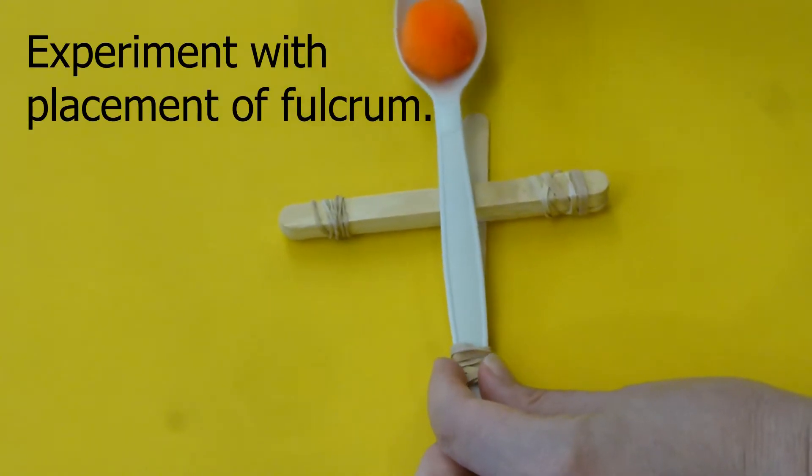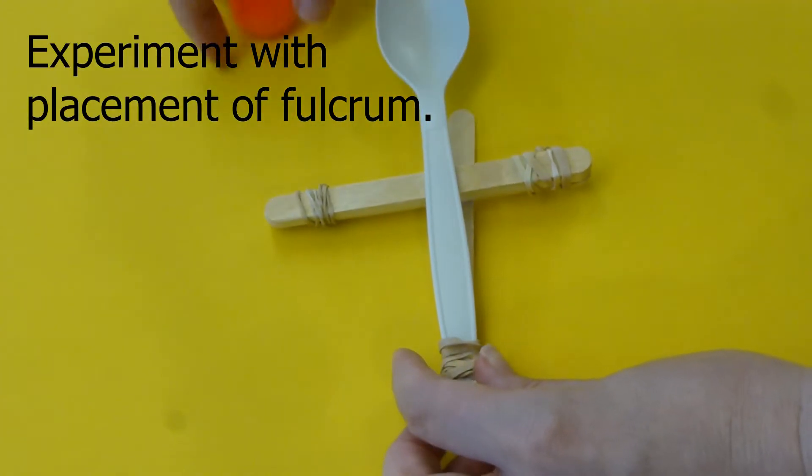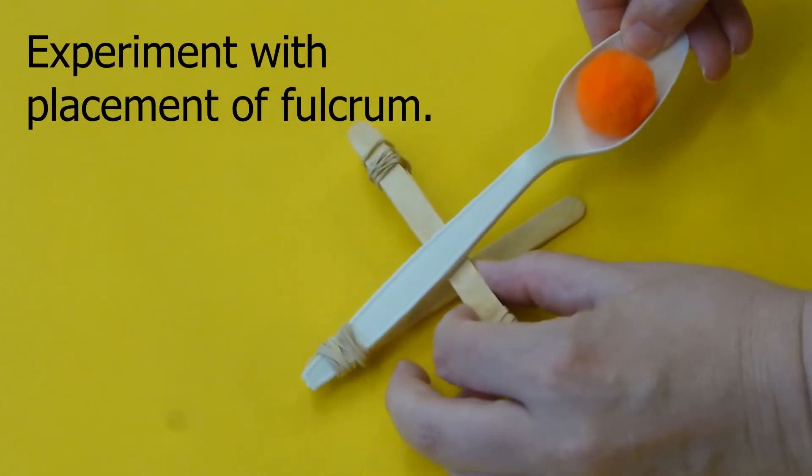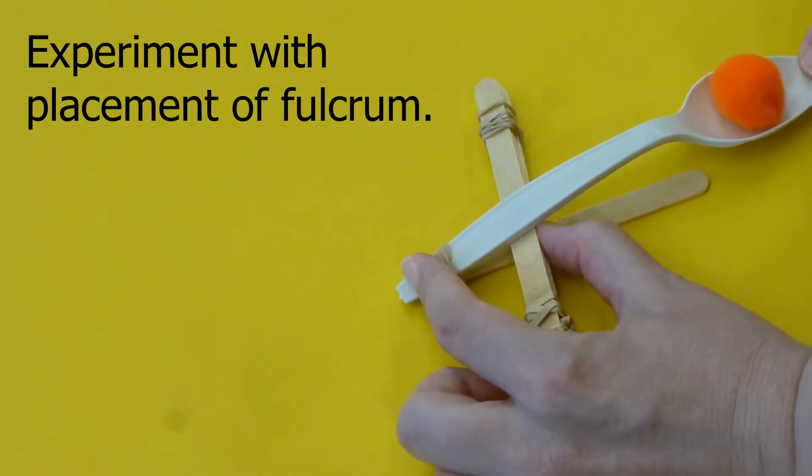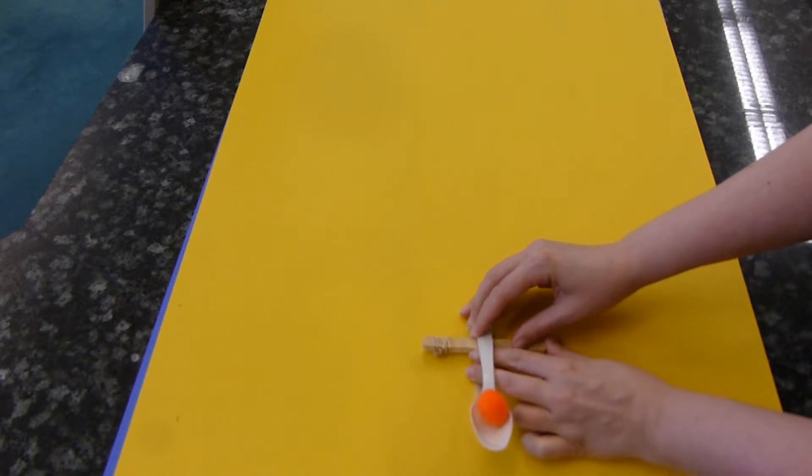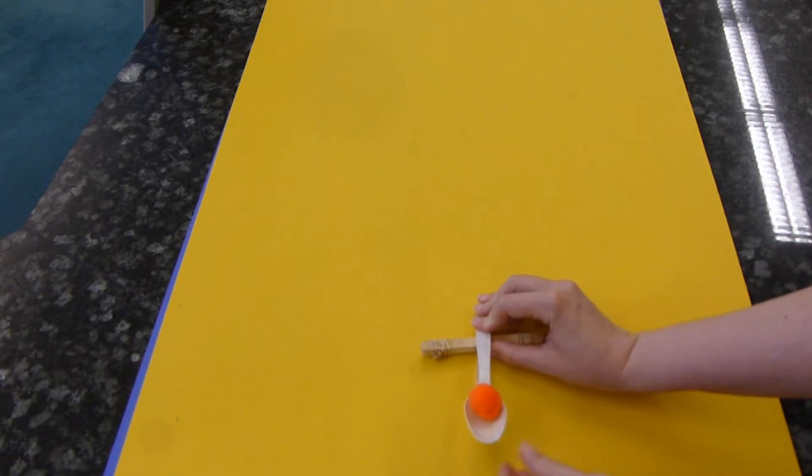If we pull back the spoon and release, you'll see that the pom-pom doesn't go very far because the fulcrum is very far back. If we place it closer to the end of the spoon, you'll see that we can get much more flexion and tension in our spoon and thus create a farther flinging catapult.